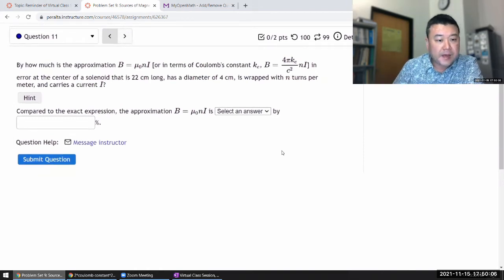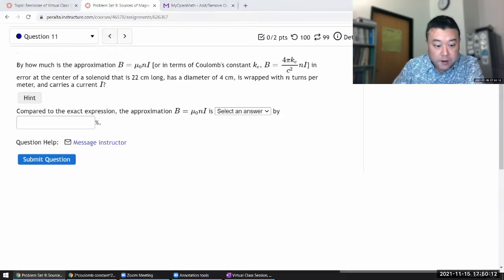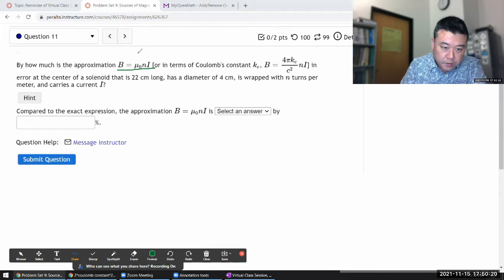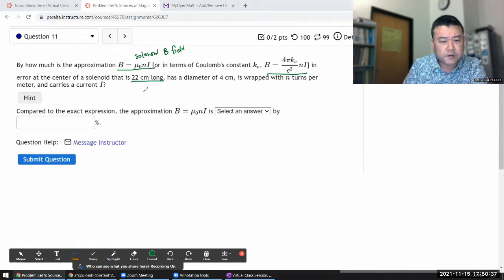It asks by how much is the approximation in error. This is the formula for the magnetic field inside the solenoid, in terms of Coulomb's constant. We're looking at the center of a solenoid that has a certain length and diameter, wrapped with n turns per meter and carries a current I.